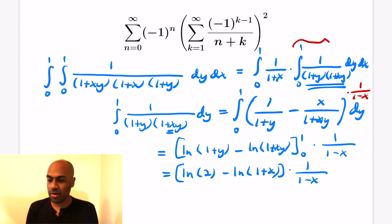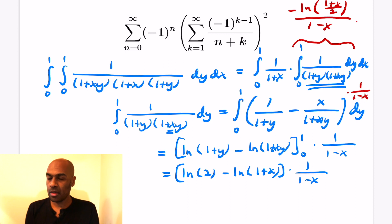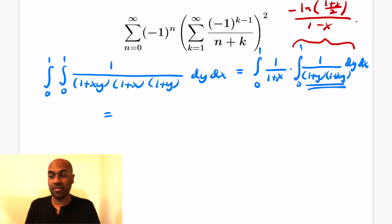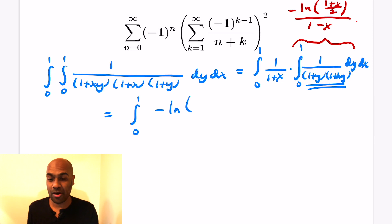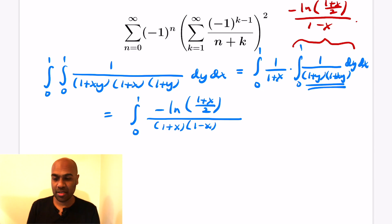We can rewrite this as one expression by subtracting the logarithms, which is the same as dividing the arguments. Taking the negative out, we get negative ln of ((1 plus x) over 2), all divided by 1 minus x. That is the expression for our y-integral, so the double sum can now be expressed as one integral in x: the integral from 0 to 1 of negative ln of (1 plus x)/2 over (1 plus x)(1 minus x) dx.